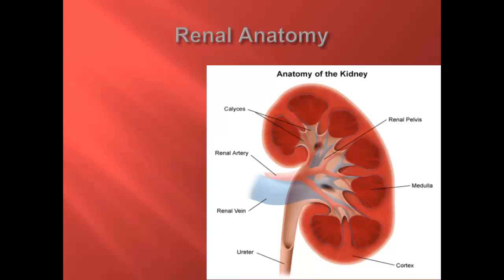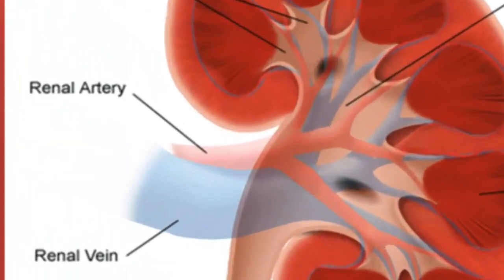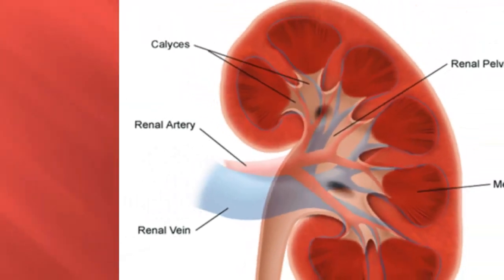Renal anatomy. Surrounded by a brightly echogenic fibrous capsule, each kidney can be divided into two distinct anatomical parts: the renal parenchyma, composed of the renal cortex and the medullary pyramids, and the renal sinus. The parenchyma surrounds the sinus on all sides except at the hilum, where the renal artery enters and the renal vein and ureter exit the kidney on its medial concave surface.